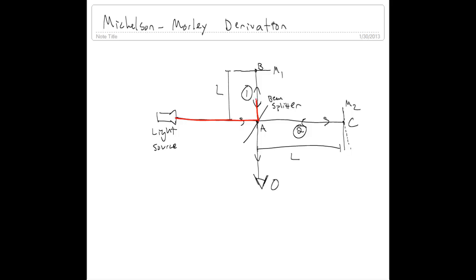Part of that light reflects off of the beam splitter, goes to this mirror and to this point B, will reflect and then go back, go through the beam splitter, and eventually hit an observer or a screen that's sitting there.